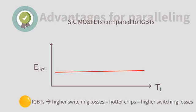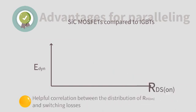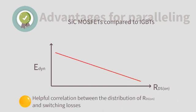With IGBTs, higher switching losses equal hotter chips, which, in turn, translates into higher switching losses and a negative feedback effect. Finally, we have a helpful correlation between the distribution of RDS-on and switching losses.